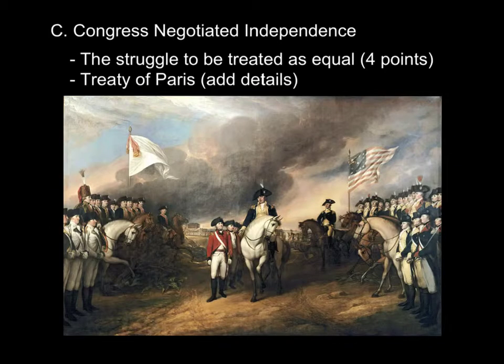Another great thing that the Continental Congress managed to do under the Articles of Confederation was to negotiate independence. The struggle was trying to be treated as an equal, sovereign nation by other European countries that had been countries for many centuries. And the French, when the end of the war came, were trying to manipulate the negotiations because they had several things on their agenda that they wanted to push through.